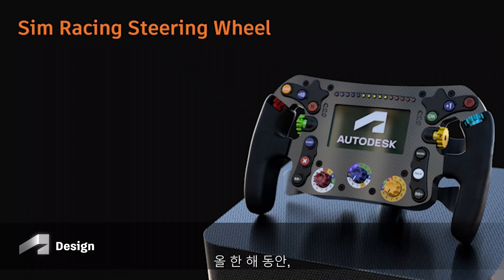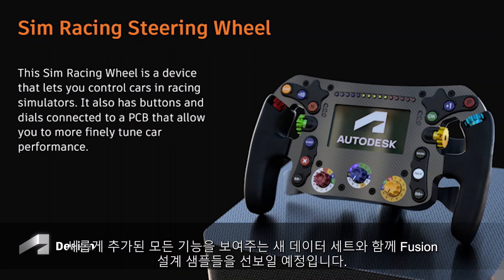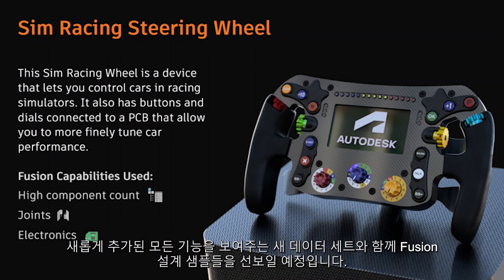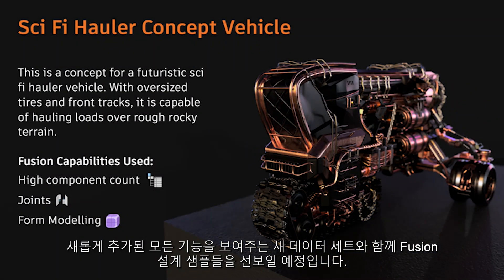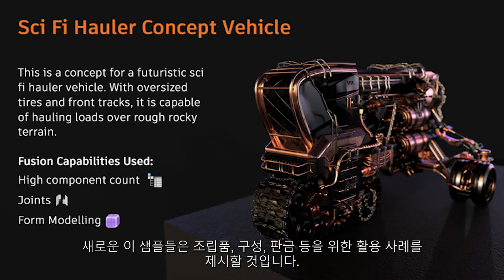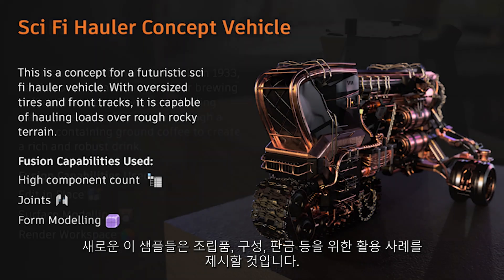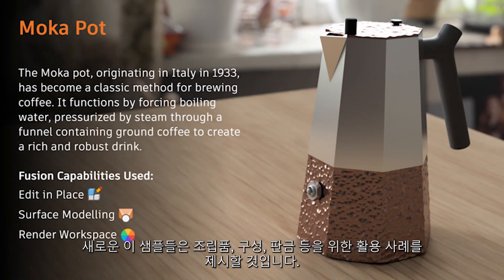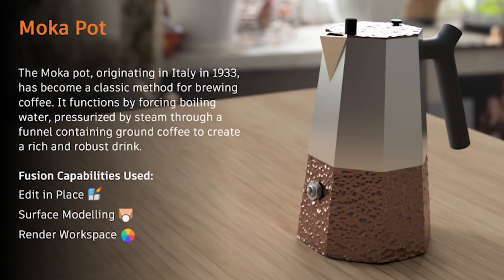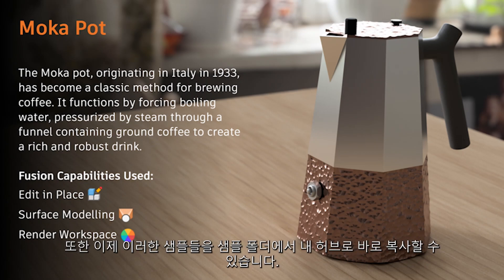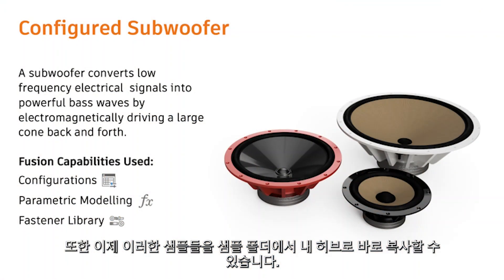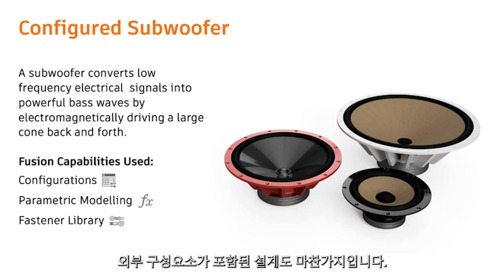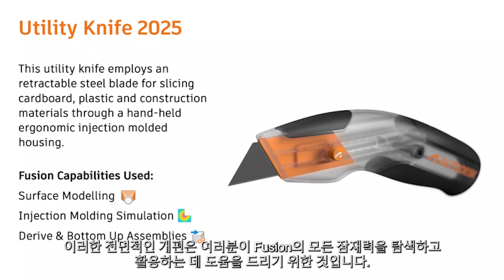Throughout this coming year we'll be refreshing the Fusion design samples with new datasets that showcase all the new capabilities we've been adding. These new samples will provide best practices for assembly, configuration, sheet metal, and more. Additionally, you'll now have the ability to copy these samples from the samples folder directly to your own hub, including designs with external components. This overhaul is all about helping you explore and leverage the full potential of Fusion.